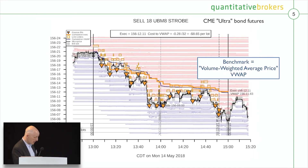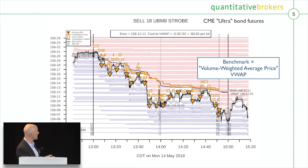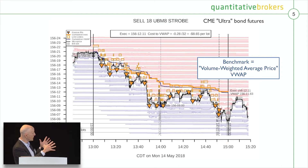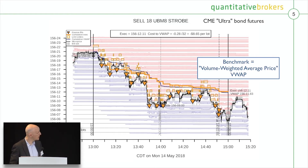Here's another example — we also trade against other benchmarks. In this case, the instruction was 18 lots, a small order of CME ultra bond futures across a two-hour window from 1 p.m. to 3 p.m., and the benchmark was the average price across the interval. We trade roughly according to a forecast volume profile, but we can deviate from the profile a little bit ahead or behind to try to get better prices.